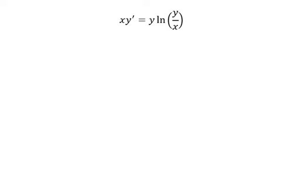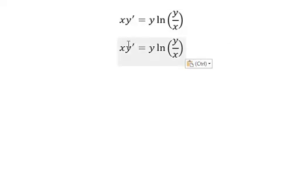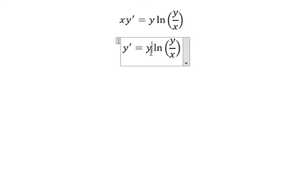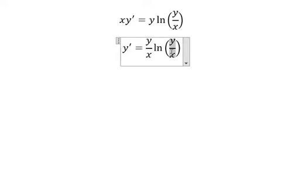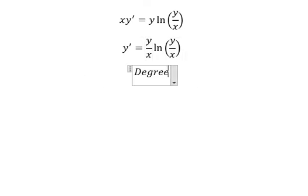Hello everybody, so today I want to talk about calculus. The topic today is about differential equations. I want to show you how to answer — we divide both sides by x, so we have y over x. This is about grid number one, and that is about homogeneous.